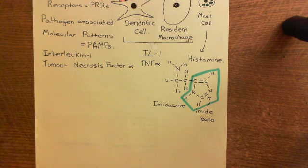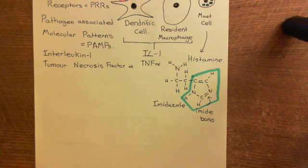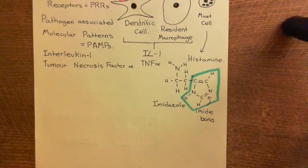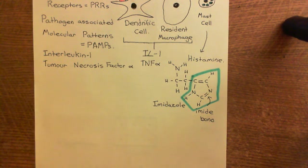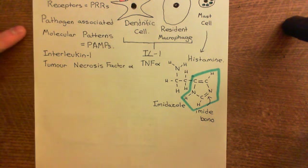Welcome to this next video in which we're discussing the calicrine-kinin system. We've discussed that when you have a pathogen invading your tissue, that pathogen will have all sorts of molecules associated with it that normal human cells would never have. We've grouped all of these together underneath this umbrella term: pathogen-associated molecular patterns, or PAMPs.